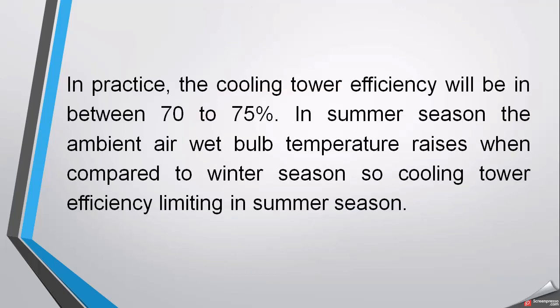In practice, cooling tower efficiency is typically between 70 to 75 percent. In summer, the ambient wet bulb temperature rises compared to winter, which limits cooling tower efficiency. Because temperatures — especially wet bulb temperature — are higher in summer, the cooling tower efficiency is more constrained in summer than in winter, meaning maximum efficiency is harder to achieve during the hot season.